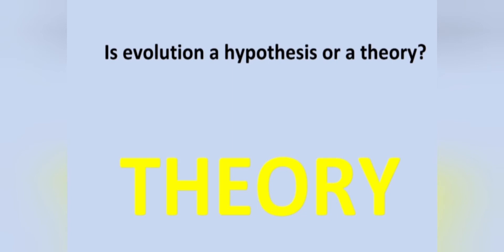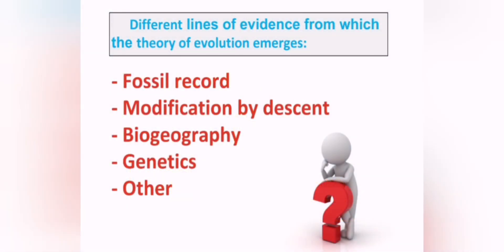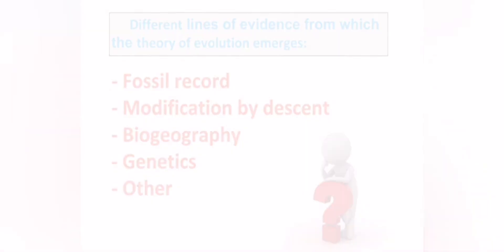Remember, with the scenario of the broken glass and the blood splatter, every theory is based on some facts. So let's look at what factual evidence exists to back up the theory of evolution. There are different lines of evidence from which the theory of evolution emerges — some of these we've already looked at in grade 10 and 11 and earlier this year in genetics. These include the fossil record, modification by descent, biogeography, genetics, and some others.